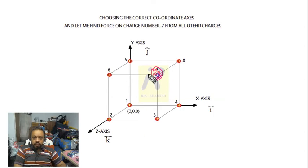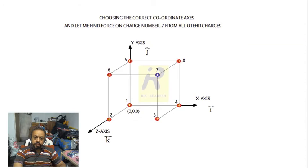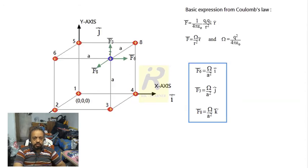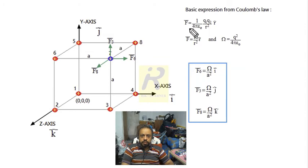Don't forget: î is the unit vector along the x-axis, ĵ is along the y-axis, and k̂ is along the z-axis. Now, the basic expression for Coulomb's law is: F = (1/4πε₀) · (q₁q₂/r²) · r̂.